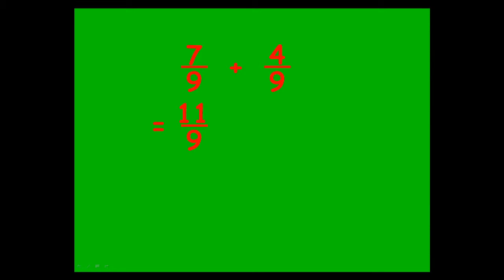Seven ninths plus four ninths, you end up with eleven ninths. You don't leave your answer as a top-heavy fraction. So you think of eleven over nine as eleven divided by nine, and you end up with a mixed number answer of one and two ninths. If you need guidance on how to do that, you can watch the other video.